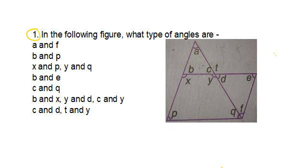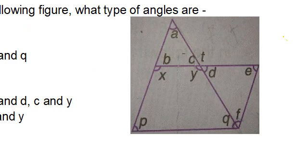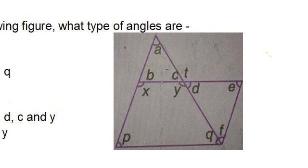This is Question 1 of Exercise 12. In the following figure, we are asked: what type of angles are A and F, B and P, X and P, Y and Q, and so on? Here in the figure we have many angles — A, B, C, D, E, F, G and so on — marked using several variables. We have to tell what type of angles these are.